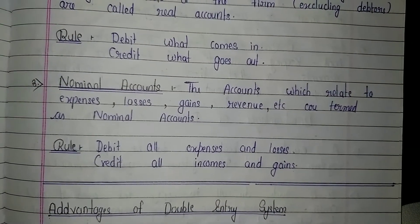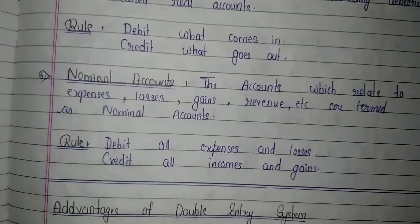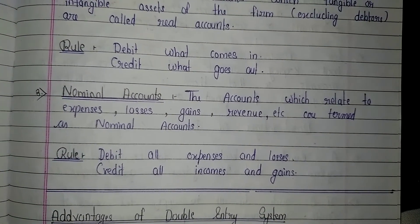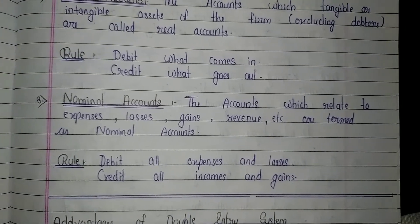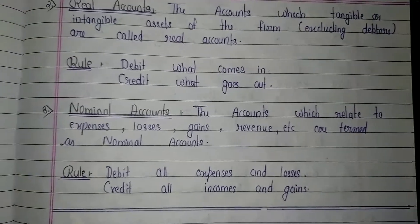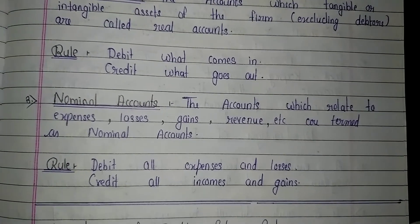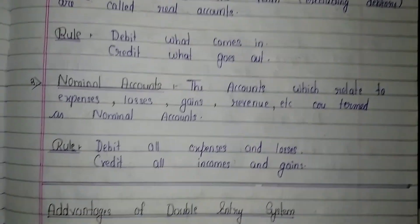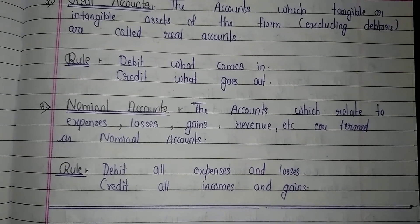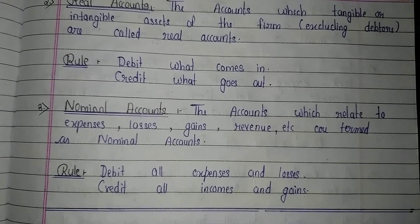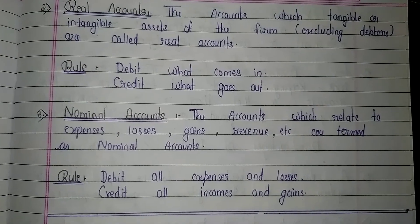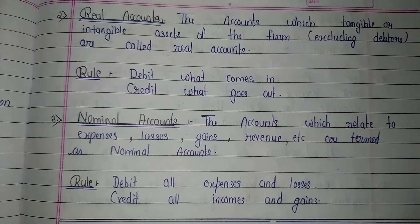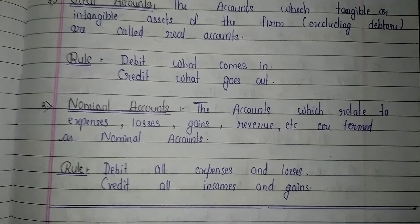The second type of impersonal account is nominal accounts. The accounts which relate to expenses, losses, gains, and revenue are termed as nominal accounts. The rule is: debit all expenses and losses, and credit all incomes and gains. So expenses and losses are debited, while incomes and gains are credited.